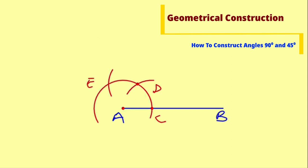So now what you should know is that arc CD is 60 degrees, and arc DE is also 60 degrees. Therefore from C to E is 120 degrees, and halfway between E and D is 90 degrees. Therefore, if you bisect arc ED you are getting 90 degrees.